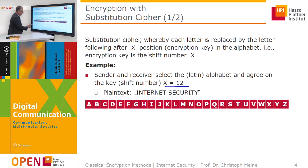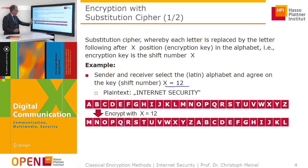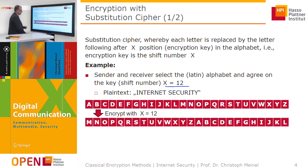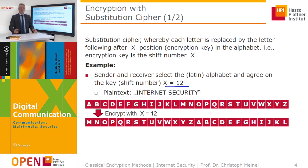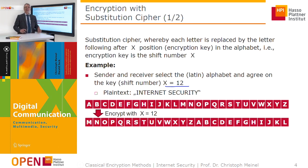If we encrypt the plain text 'internet security', we simply shift each letter by 12 positions in the alphabet. So A is replaced by M, B by N, C by O, D by P, and so on. With this key — shift by 12 positions — each letter is encrypted by a different letter.